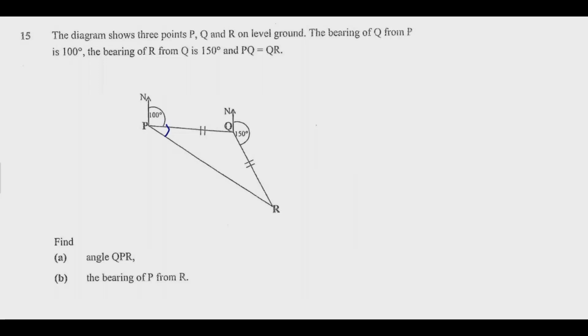Part B is the bearing of P from R. We stand at R and draw this line - this is the angle we're looking for.